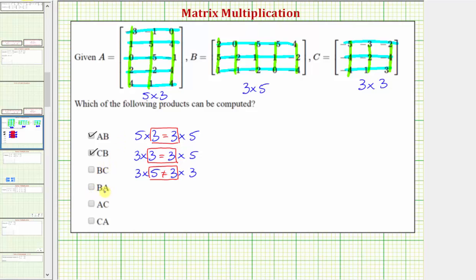Next we have matrix B times A. Matrix B is a three by five matrix and matrix A is a five by three matrix. The number of columns in the first matrix is equal to the number of rows in the second matrix, which means we can compute B times A, and the result would be a three by three matrix.